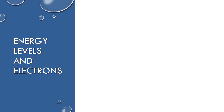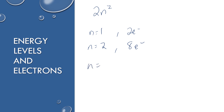The number of electrons that can fit in a given energy level is given by the equation 2n squared. So when you have n equals 1, you can fit 2 electrons, because 1 squared is 1 times 2 is 2. When you're at the second energy level, you can fit 8 electrons. When you're at the third energy level, you can fit 18 electrons. And when you're at the fourth energy level, you can fit 32 electrons. We will look at how these are organized into individual orbitals and sub-levels in a later section, but for now you just need to know the number of electrons possible for a given energy level.